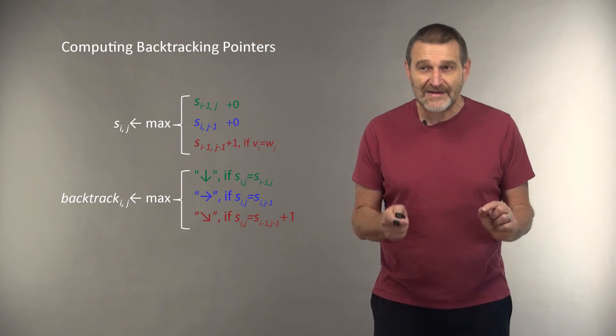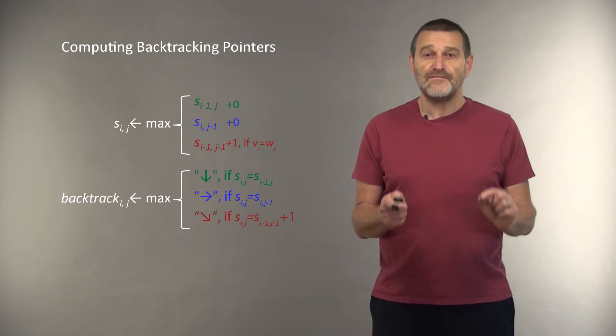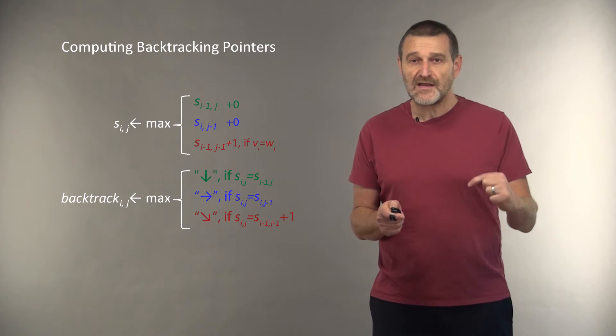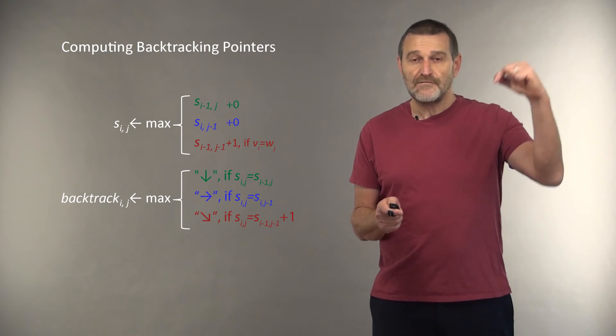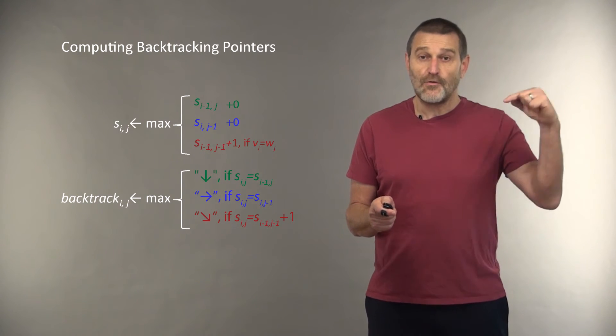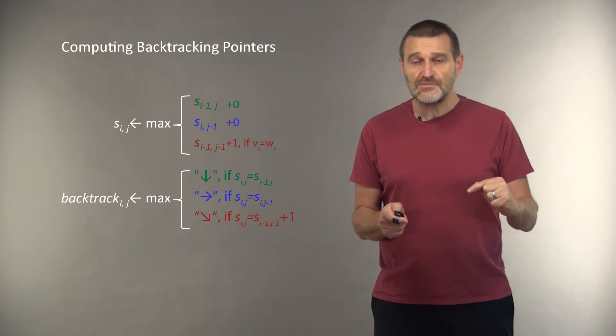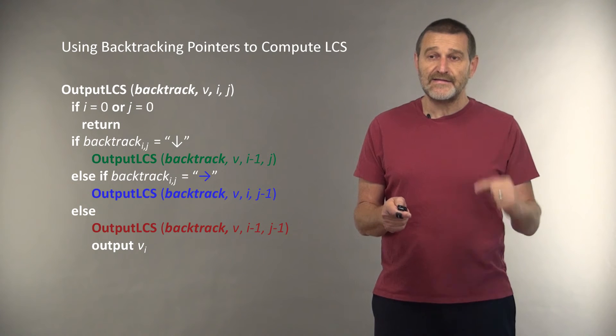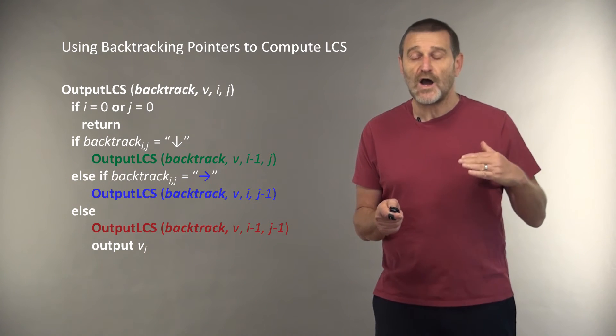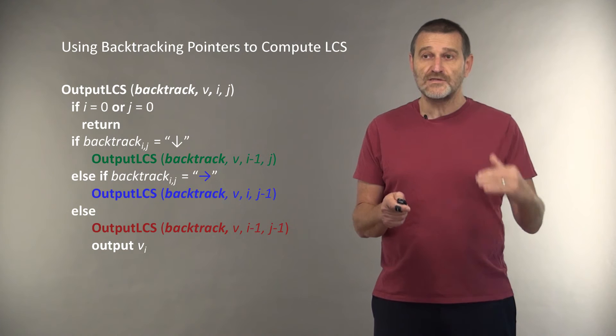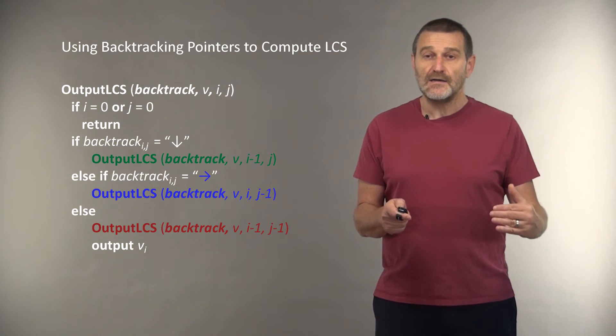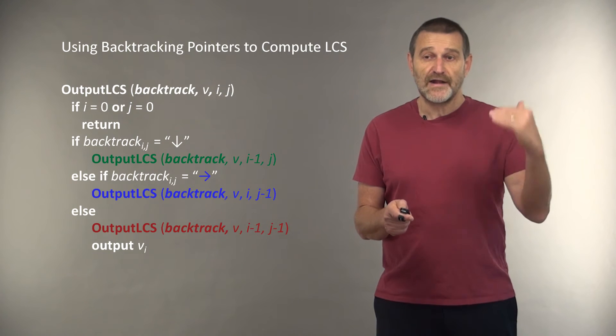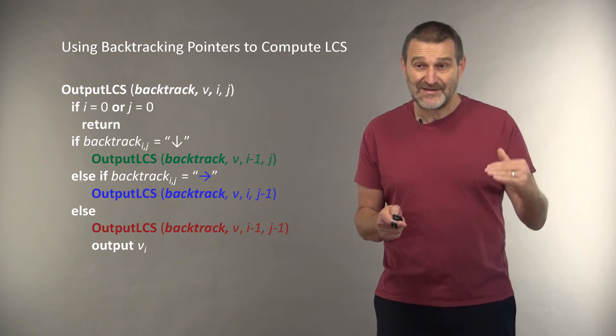To compute backtracking pointers, we have three choices. We can either record a backtracking pointer as a vertical, horizontal, or diagonal edge. And as soon as the backtracking pointers are computed, we can write a simple program that allows us to output the longest common subsequence by, once again, exploring three choices: green choice, blue choice, and red choice.